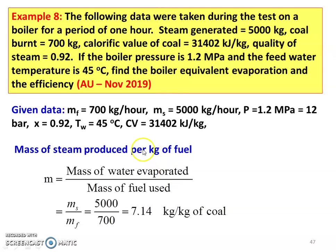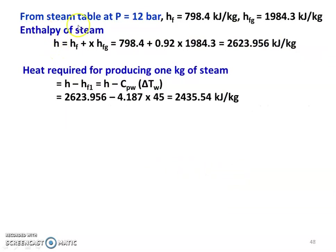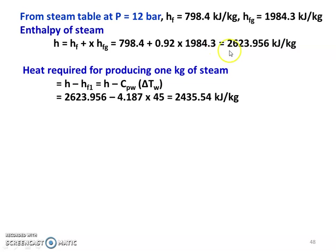Mass of steam produced per kg of fuel: m = M_s / M_f = 5000 divided by 700 = 7.14 kg per kg of coal. From the steam table at pressure P = 12 bar: h_f = 798.4 kJ/kg and h_fg = 1084.3 kJ/kg. Enthalpy of steam: h = h_f + x × h_fg = 798.4 + 0.92 × 1084.3 = 2623.956 kJ/kg.